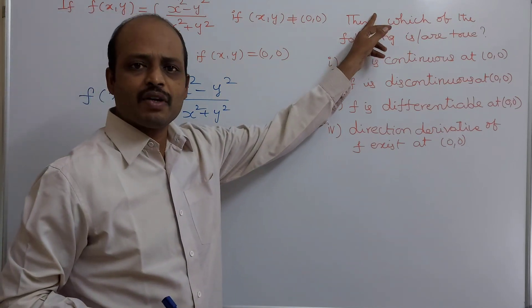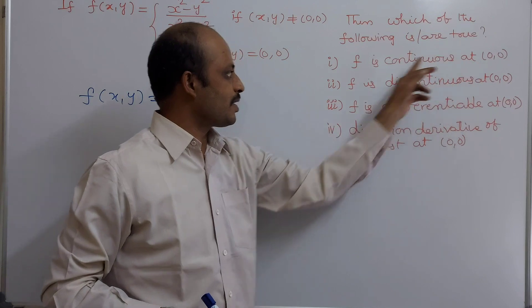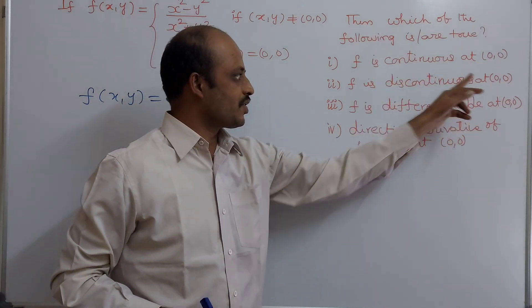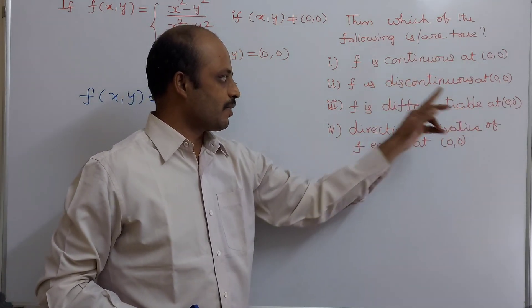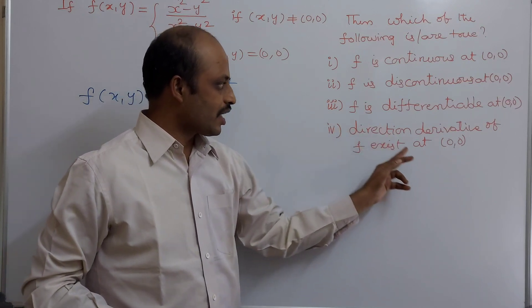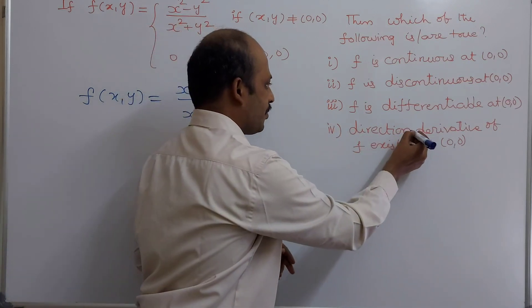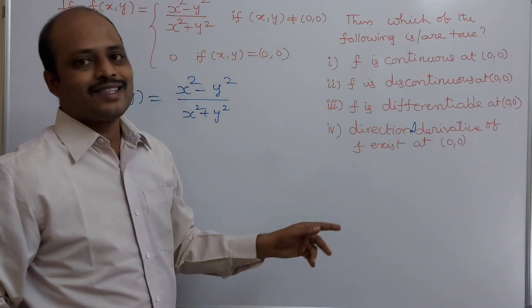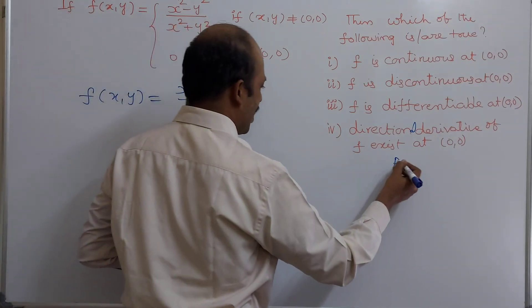Then which of the following are correct? f is continuous at (0,0), f is discontinuous at (0,0), f is differentiable at (0,0), directional derivative exists at (0,0). This is a question from part B.